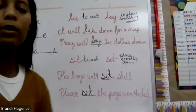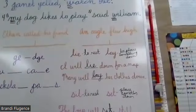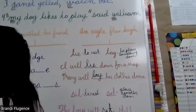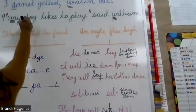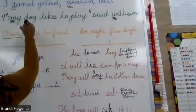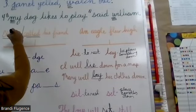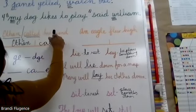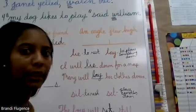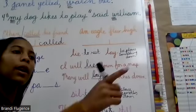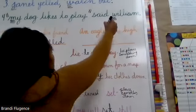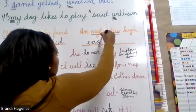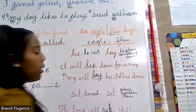Let's go ahead and diagram these two sentences. 'Ethan called his friend.' Where am I going to divide my sentence? The subject is Ethan and the verb is called. Diagramming a sentence is when we highlight the subject and the verb. Next one: 'An eagle flew high.' Eagle is the subject and flew is the verb.